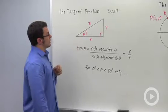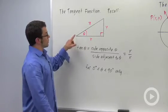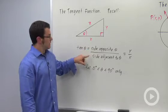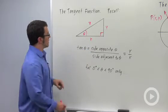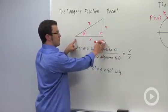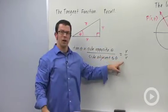The tangent function was defined in right triangle trigonometry this way: tangent theta equals the side opposite theta divided by the side adjacent to theta. So if this is theta, tangent theta is this length divided by this length, or y over x.